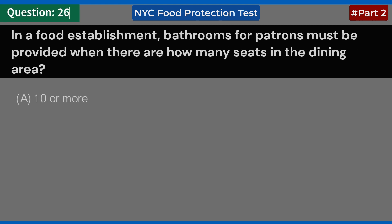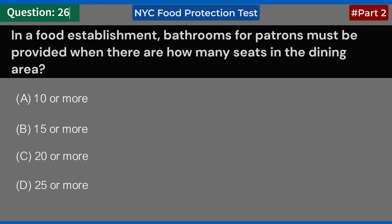In a food establishment, bathrooms for patrons must be provided when there are how many seats in the dining area? A. 10 or more. B. 15 or more. C. 20 or more. D. 25 or more. Answer: C. 20 or more.